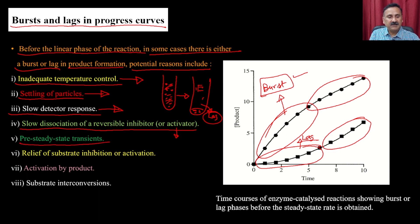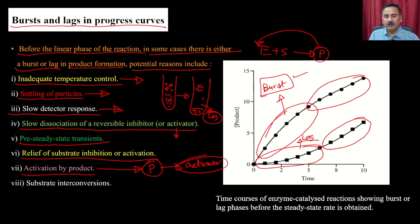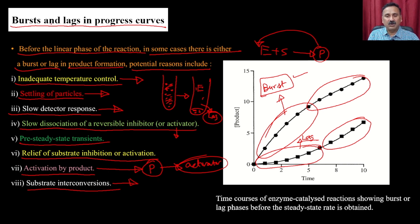Other causes include pre-steady-state transients, relief of substrate inhibition, and activation by the product. Product activation is interesting: in the lag phase, the enzyme converts substrate to product, and that product works as an activator. Initially the curve is slow, but once some product is formed, it activates the enzyme and accelerates activity. Substrate interconversion, where substrates convert to each other, also affects burst or lag phases in the progress curve.